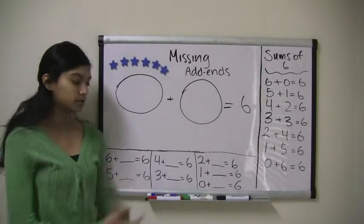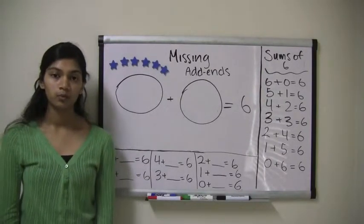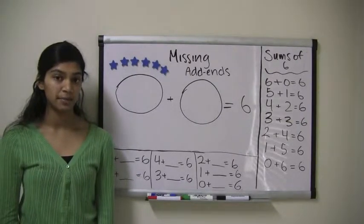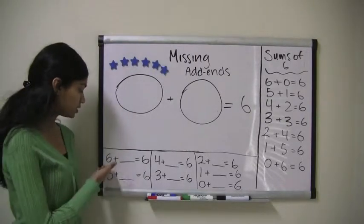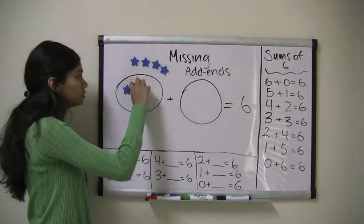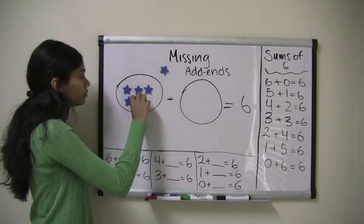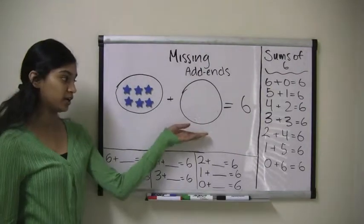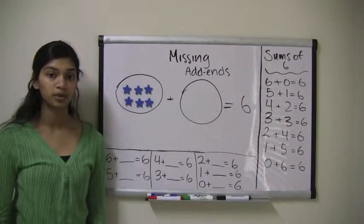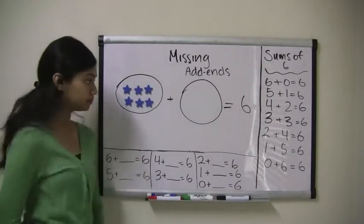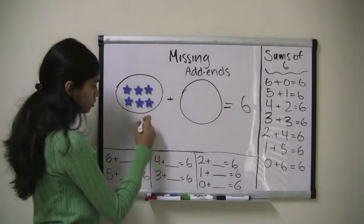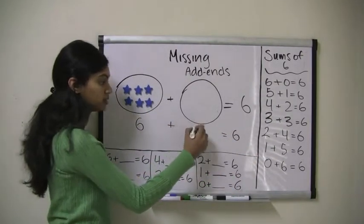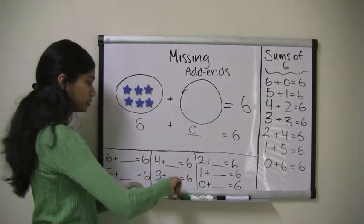Our first problem is 6 plus what equals 6? Well, we know from the sums of 6 that any grouping of 6 stars will give us a sum of 6. If we have 6 stars in the first area — 1, 2, 3, 4, 5, 6 — and we have no more stars to put in the second area, we know that 6 plus 0 must equal 6. So, 6 plus 0 equals 6.